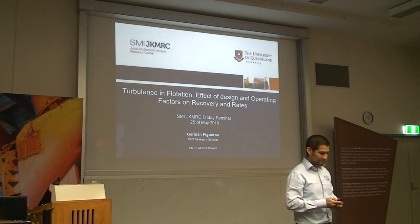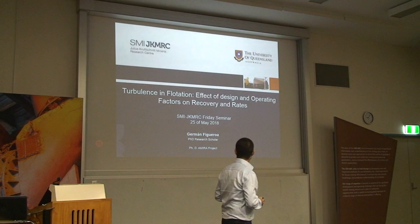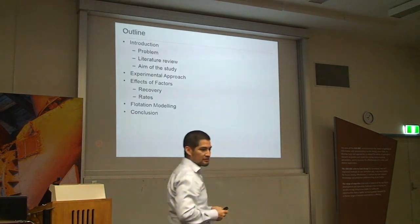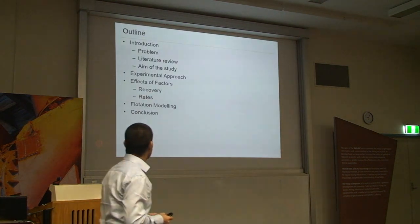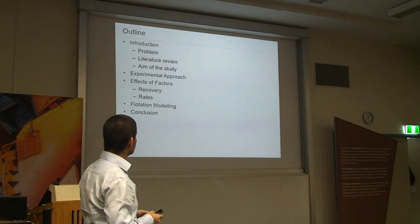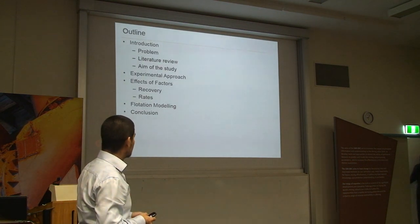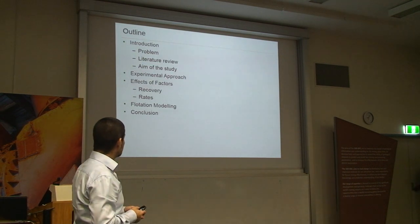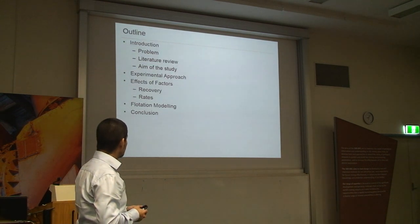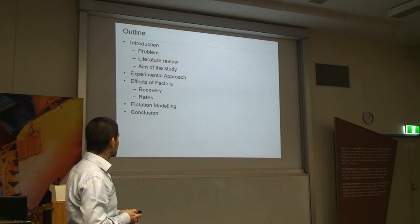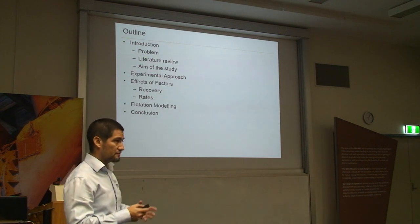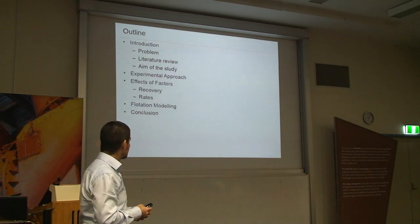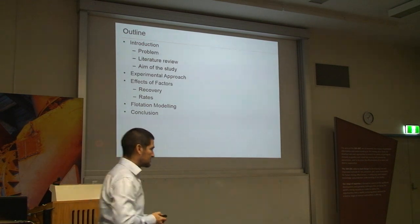The intention of this work is to study turbulence and all other traditional measurements like dispersion and power input, to understand which parameters are most important. From that, we aim to build a database to guide what parameters should be included in modeling, or to enhance or reject existing models. So the intention is first understand flotation, understand turbulence, and then come up with suggestions. The outline covers: introduction, the problem, literature review, aims of the study, experimental approach, effects on recovery, effects on rate, flotation modeling, and conclusions.